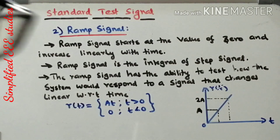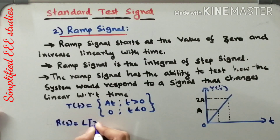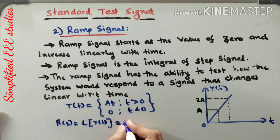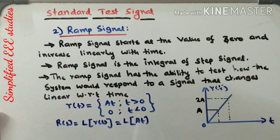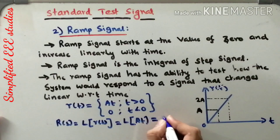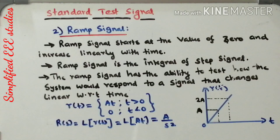If you want to convert the ramp signal into the S-domain by taking the Laplace transform: R(s) equals L of r(t), which is the Laplace transform of At. Since A is a constant and the Laplace transform of t is 1 over s squared, we get R(s) equals A divided by s squared. The application of the ramp signal is testing and verification of electronic systems.